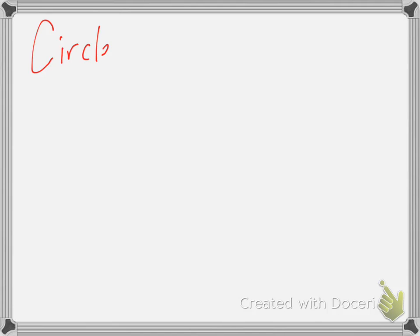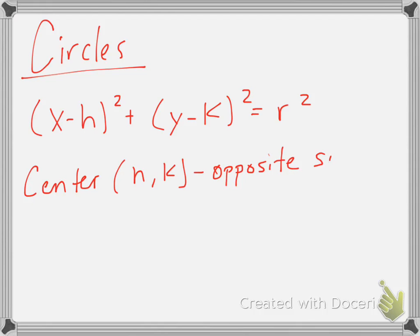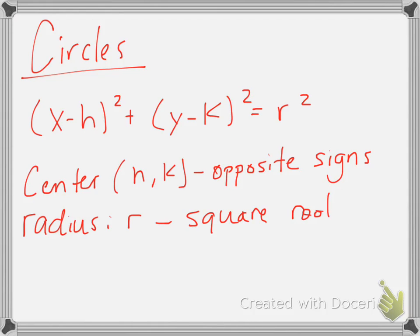We're going to start with circles and look at the general equation of a circle, which is x minus h squared plus y minus k squared equals r squared. The center is h and k, which means we have to take opposite signs from our equation. The radius is found by taking the number past the equal sign and taking the square root of it, since our radius is r.